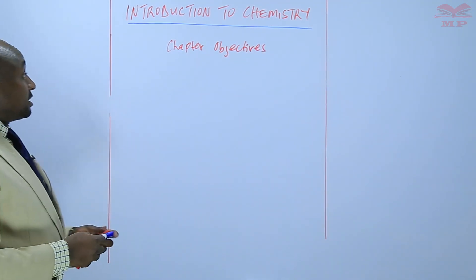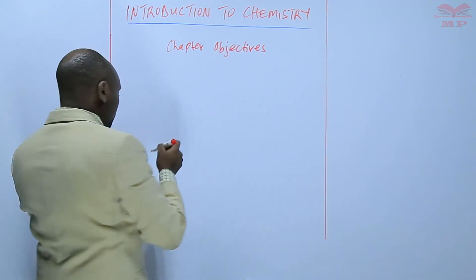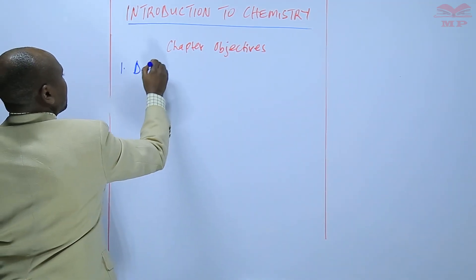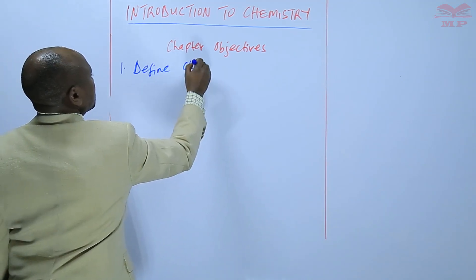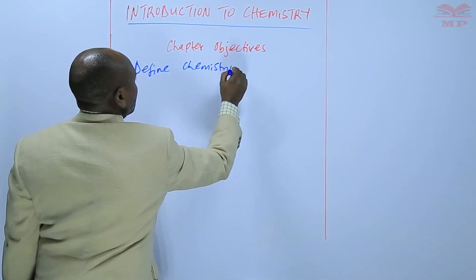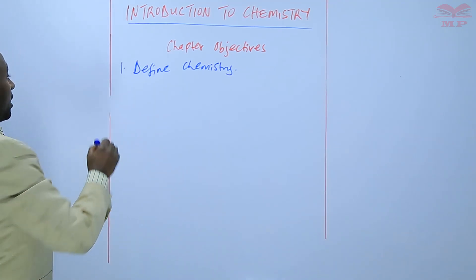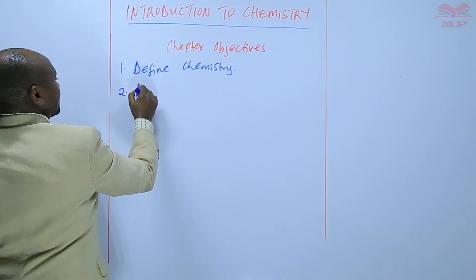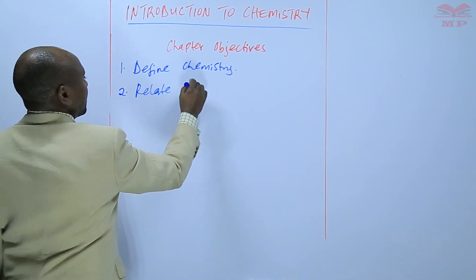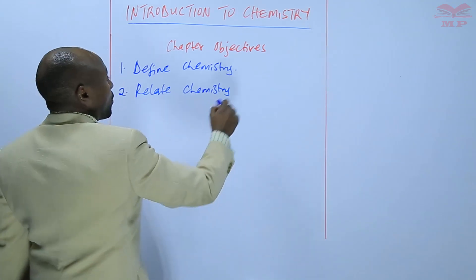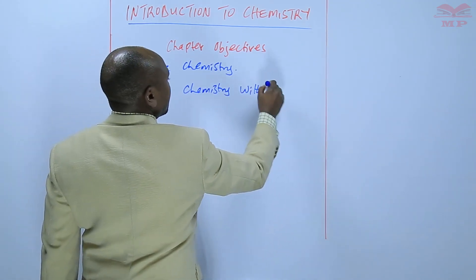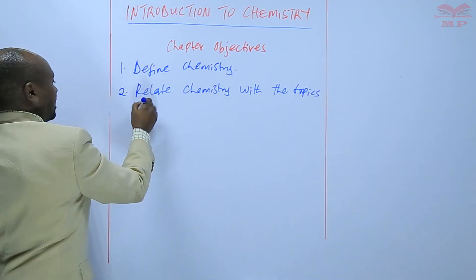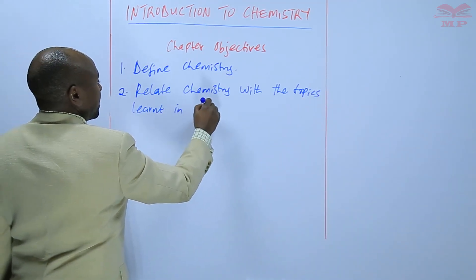The first objective of this particular chapter is to be able to define chemistry. Number two, a student should be able to relate chemistry with the topics learned in primary science.